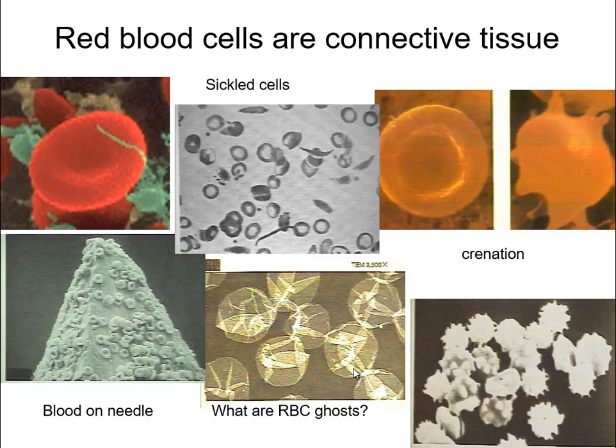There's an electron microscope picture on the top left showing where the nucleus is missing — red blood cells look like breath mints with a filled-in center. At the bottom left is a needle that's been stuck in someone and pulled out, covered with red blood cells. People who share needles are poking this into themselves after someone else has used it. You can see why you would catch diseases like hepatitis or AIDS from sharing needles, because you are transferring all that blood on the needle to the next person. That's an important thing to keep in mind.